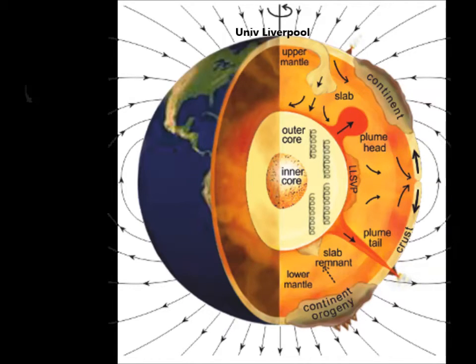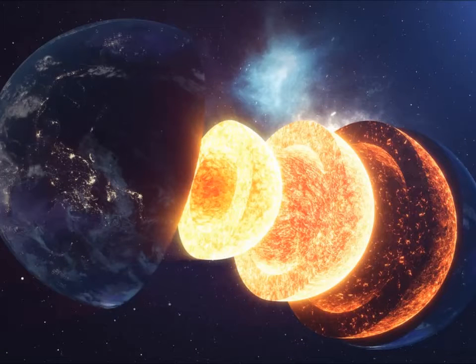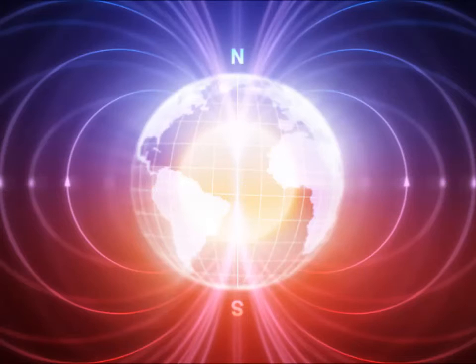Underneath our feet, deep down in the Earth, liquid iron is producing the magnetic field that we all take for granted. But every now and then the magnetic field reverses or flips its polarity. What was once magnetic north becomes south and vice versa. When these reversals take place and why they do so has been an enduring mystery.